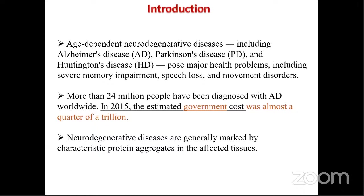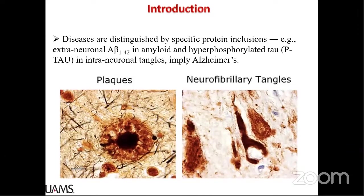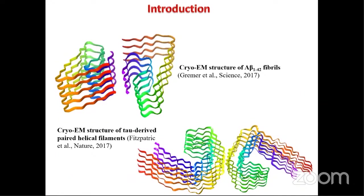Neurodegenerative diseases in general are marked by characteristic protein aggregates in the brain tissue. We distinguish these diseases based on the presence of specific seed proteins — proteins that initiate aggregation. For example, Alzheimer's disease is characterized by amyloid beta-42 containing plaques and hyperphosphorylated tau, which forms intracellular neurofibrillary tangles. The picture here shows the classic example of plaques and neurofibrillary tangles from affected human brain sections.